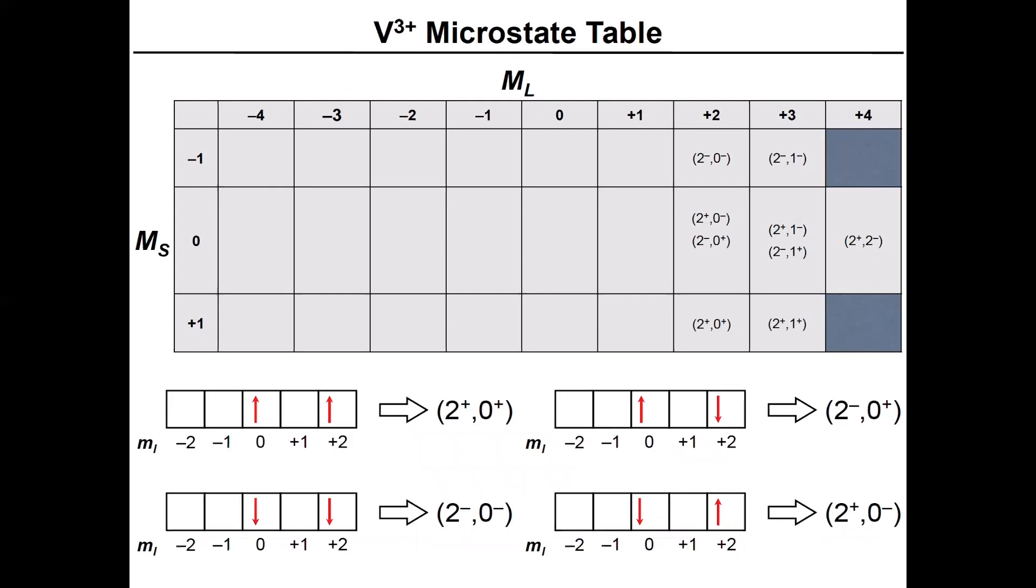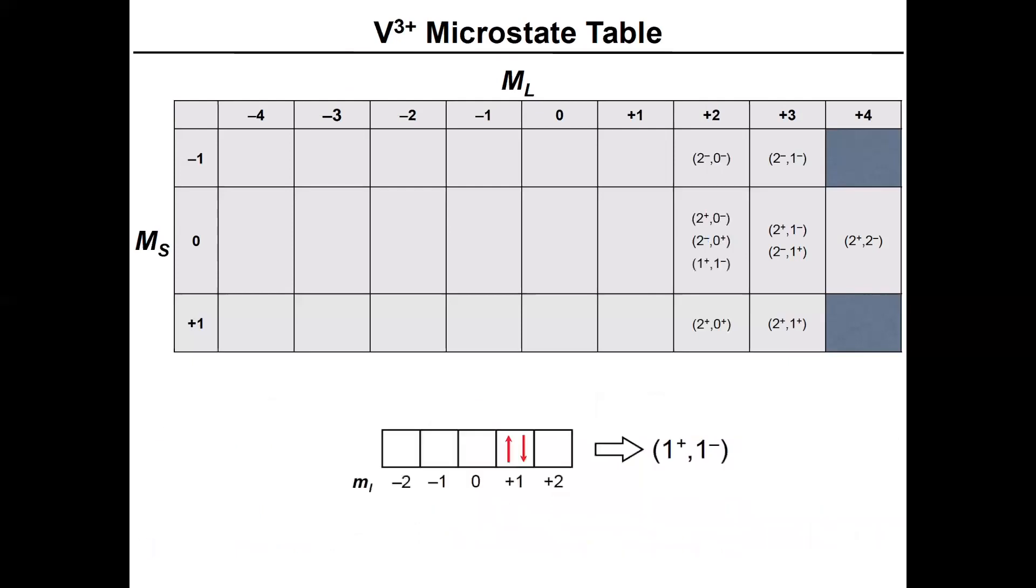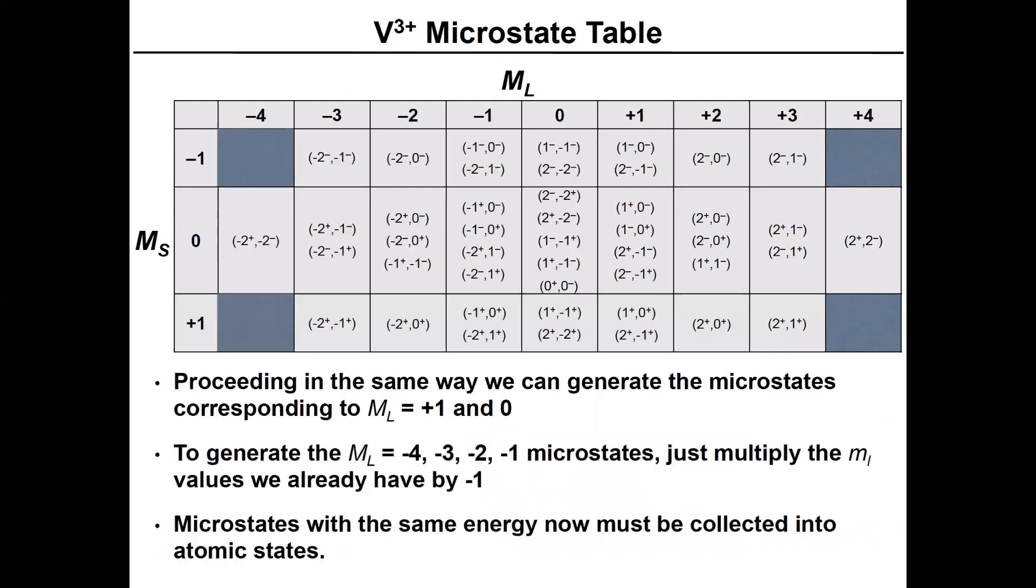Here's the possible ways of distributing the orbitals to give you effectively an ML value of plus two. You sort of work through and there's other ways you can get to plus two where you can put both electrons into the ML equals one orbital. You can continue this process. What I'm going to show you is you don't have to write out every individual microstate. If we can determine the values of L and S, we can do this a lot faster. If you make all the microstates for all the positive ML values, you can take everything on the right side of this chart, multiply it by minus one and you'll generate everything on the left side of the chart.